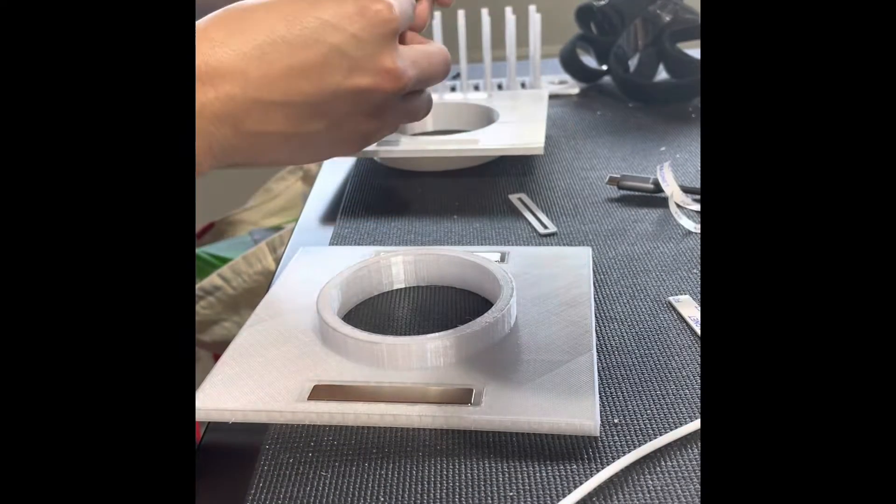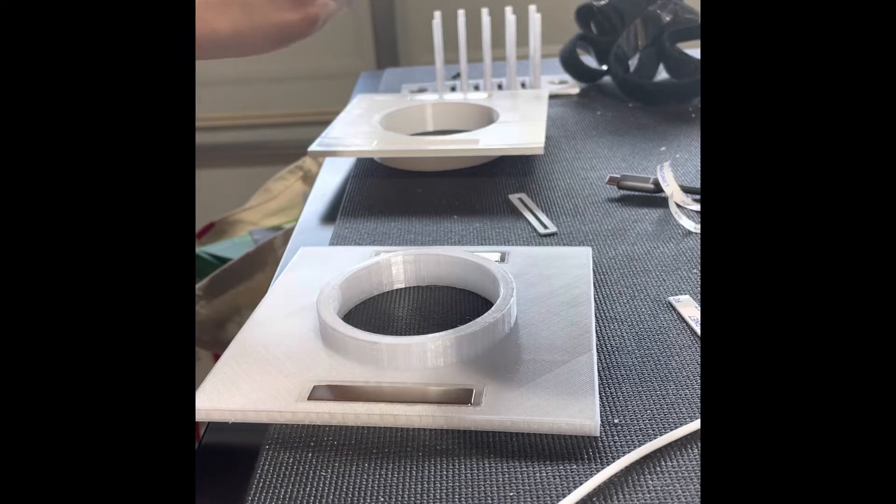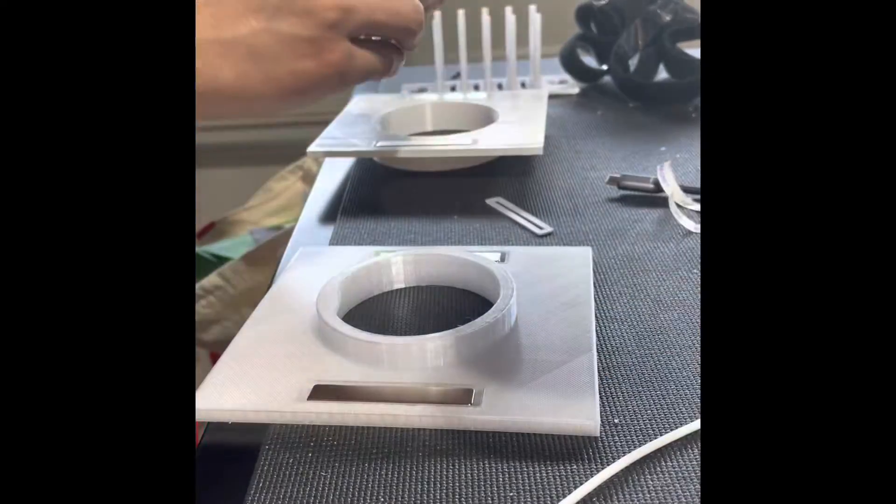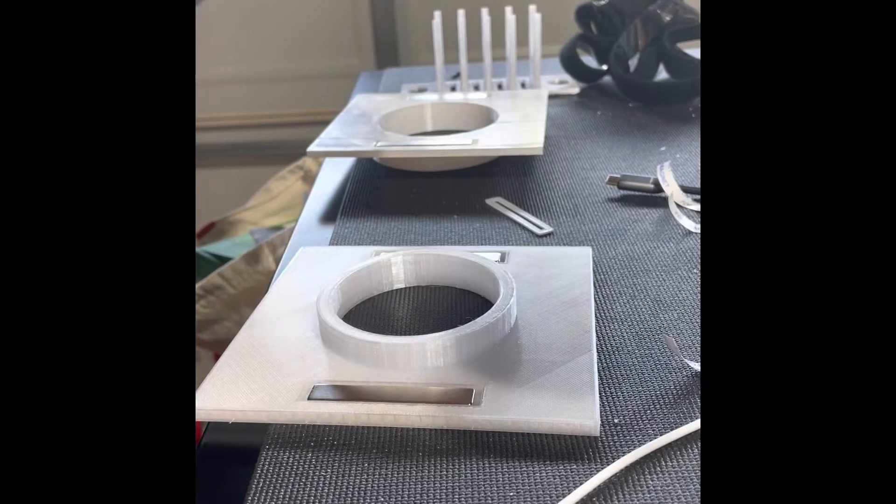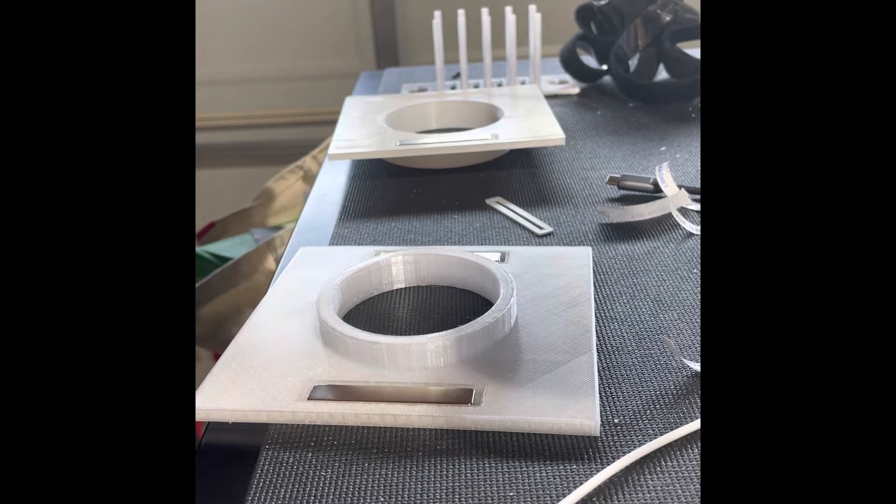Alright, so we're going to put the magnets on. The magnets come with adhesive double-sided tape. The link will be provided in the description for this part. Make sure before you put them on that they attract to each other on the other part. Make sure two parts attract to each other.